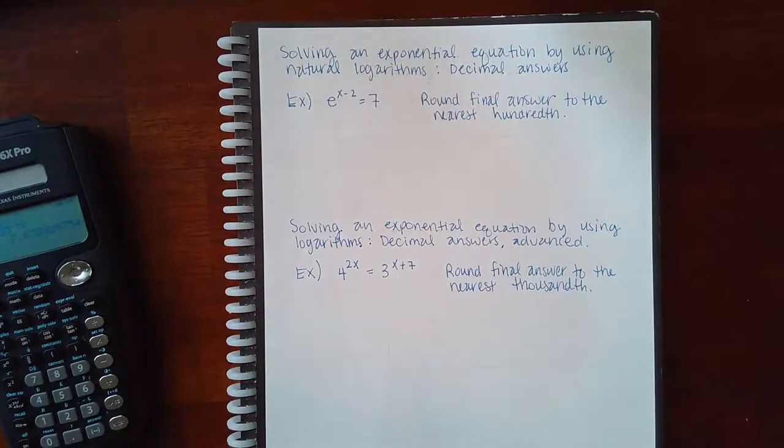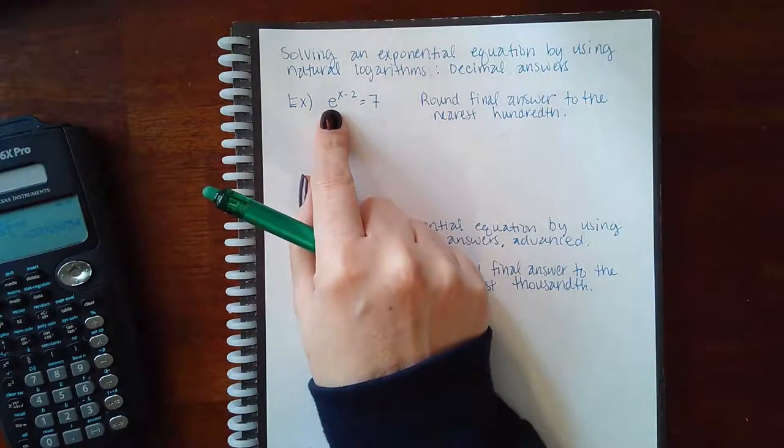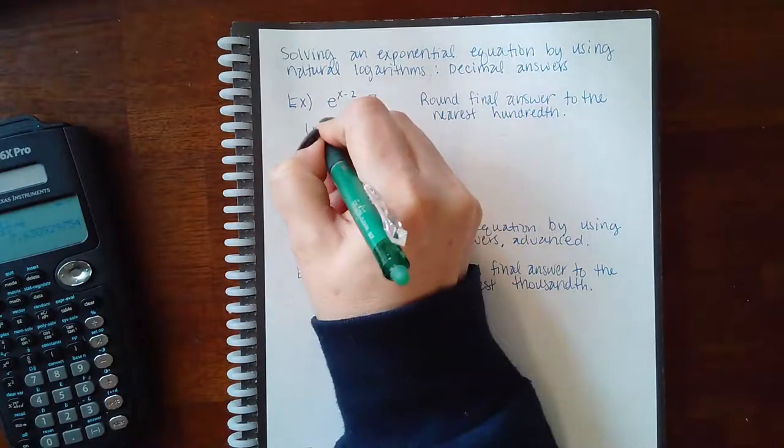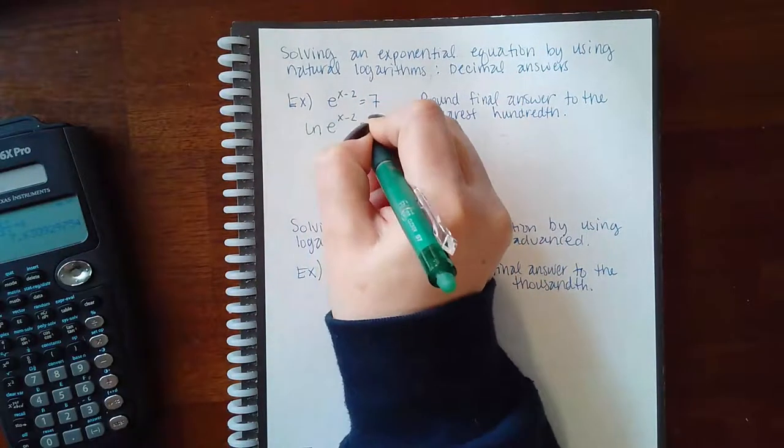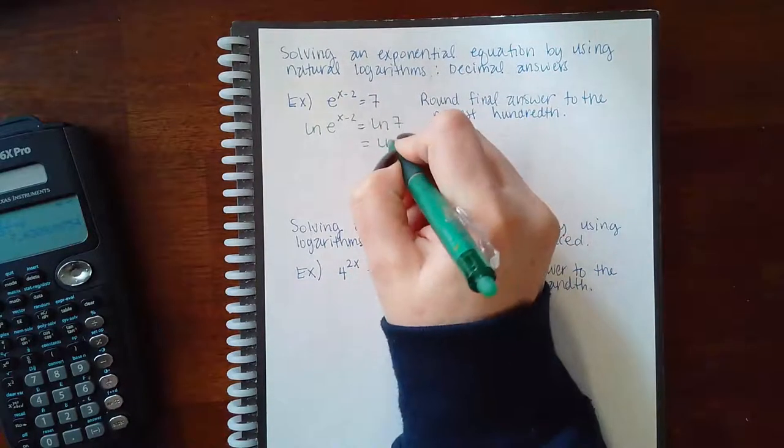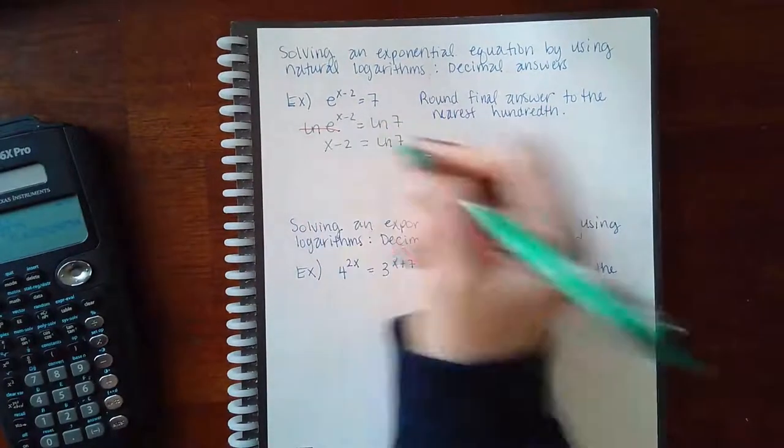Solving an exponential equation using a natural logarithm. Well here now, we do have a base E. So we can use a natural logarithm to cancel this out. So when I apply the natural logarithm on both sides, it may not cancel on the right-hand side, but it does cancel the E on the left-hand side, leaving me with x minus 2.